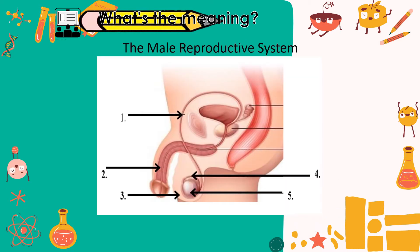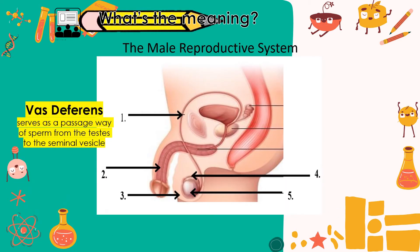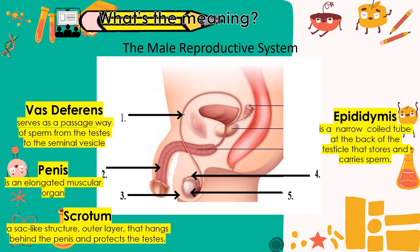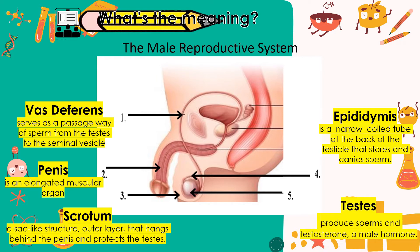The main parts of the male reproductive system: Number 1 is the vas deferens, which serves as the passageway of sperm from the testes to the seminal vesicle. Number 2 is the penis, an elongated muscular organ. Number 3 is the scrotum, a sac-like outer layer that hangs behind the penis and protects the testes. Number 4 is the epididymis, a narrow coiled tube at the back of the testicle that stores and carries sperm. Number 5 is the testes, which produce sperm and testosterone, a male hormone.